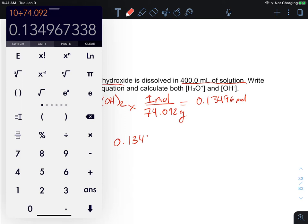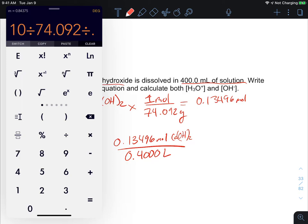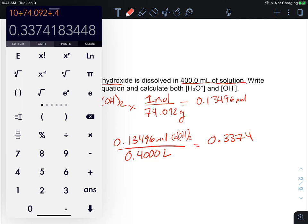Then I'm going to divide that, dissolve that in a 400 milliliter solution. So I'm going to get 0.13496 moles of calcium hydroxide dissolved in 0.4000 liters. Thank goodness I kept all those significant figures. That's going to give me 0.3374, and I can keep all four significant figures here. I had five there and I have one, two, three, four here, so I can keep four significant figures. So that's my molarity.